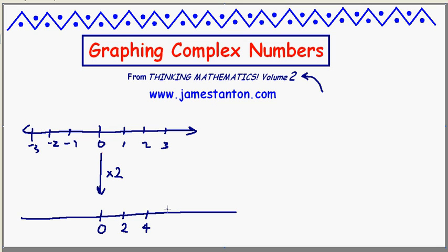1 becomes 2. 2 becomes 4. 3 becomes 6. Negative 1 becomes negative 2. Negative 2 becomes negative 4. Negative 3 becomes negative 6. That's my new number line. What's it done? Well, it's actually made my number line go through its numbers twice as fast, it's contracted it. So, multiplying by 2 corresponds to a contraction of the number line.